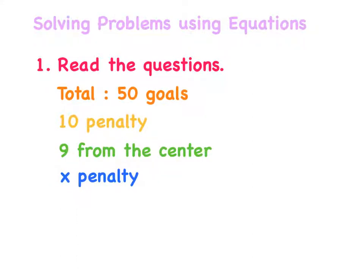Solving problems using equations. First, read the questions. The total is 50 goals. 10 from penalty, 9 from the center, and x is the number of hat trick.